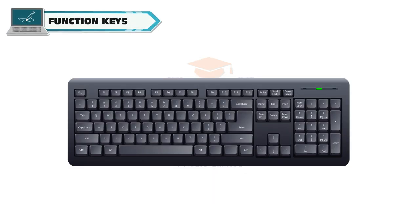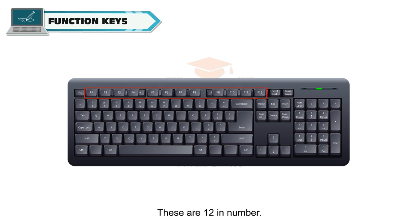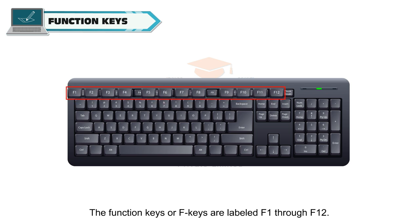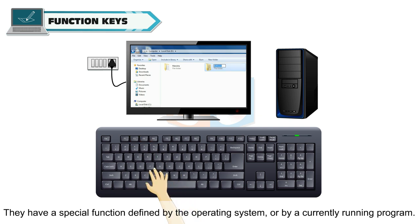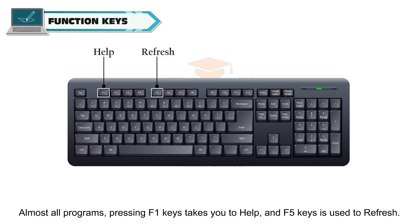Function keys are located at the topmost row of the keyboard. These are 12 in number, labeled F1 through F12. They have a special function defined by the operating system or by a currently running program. They may be combined with the shift, alt, or control keys. In almost all programs, pressing F1 takes you to help, and F5 is used to refresh.